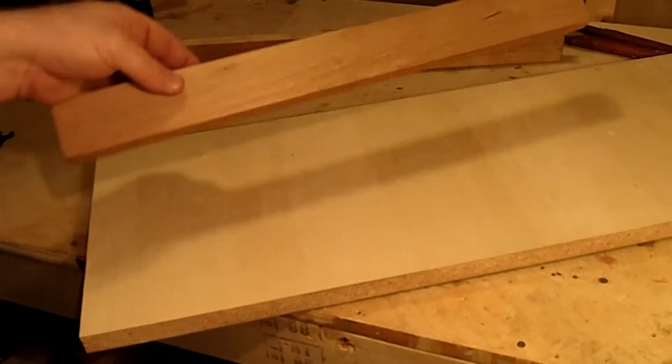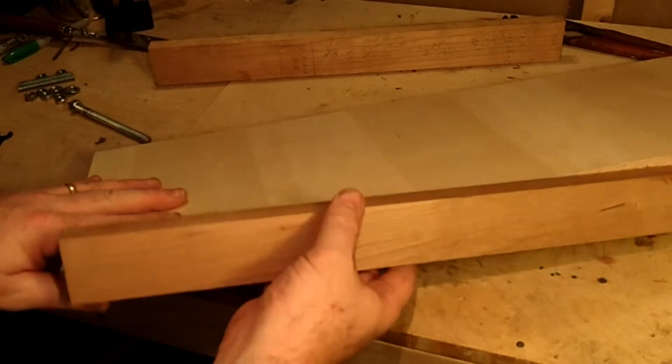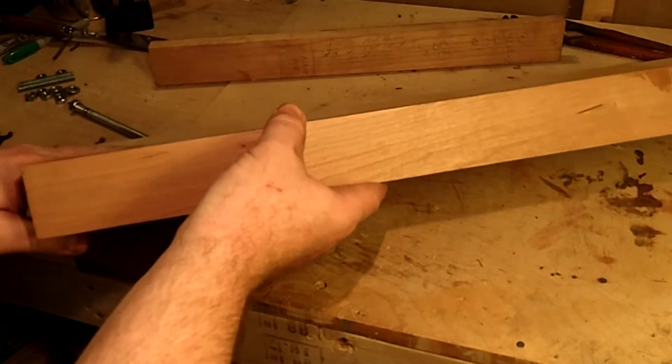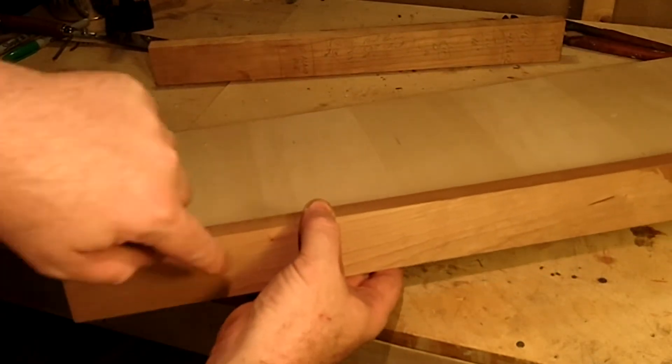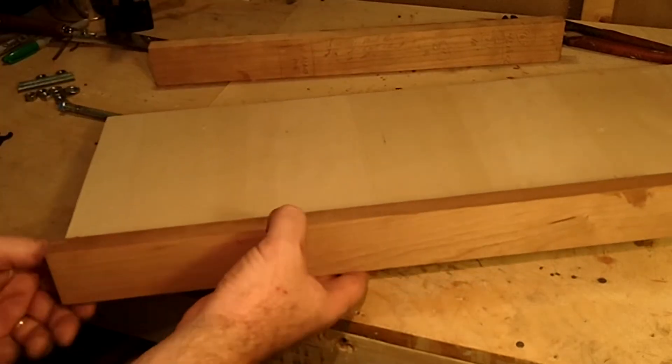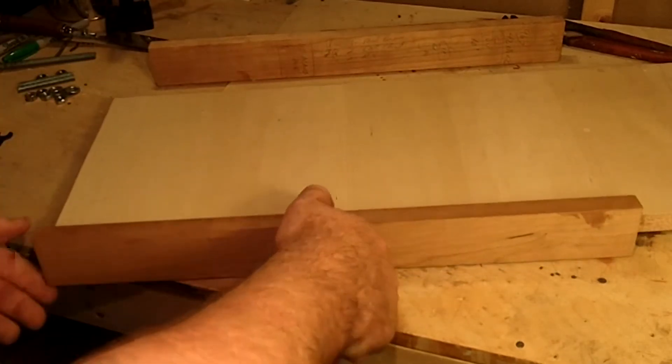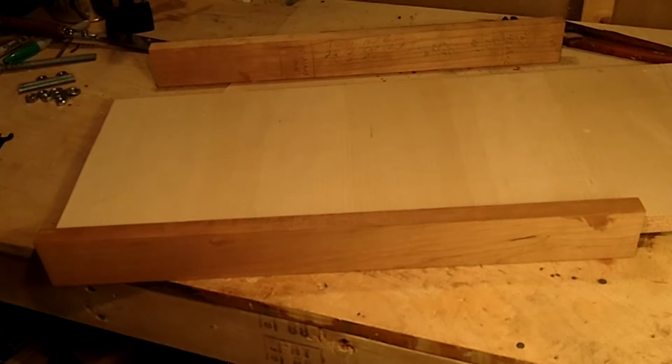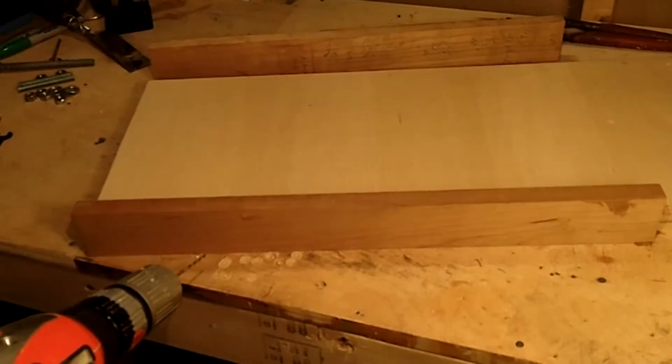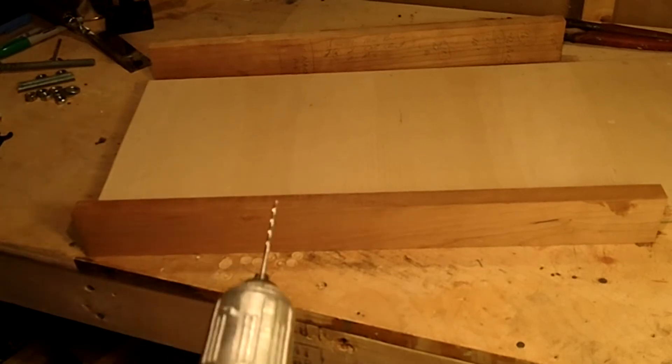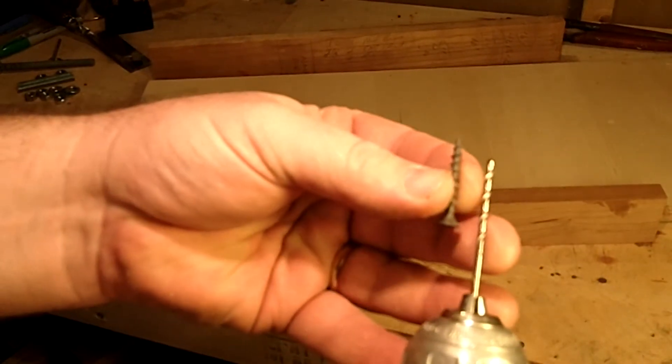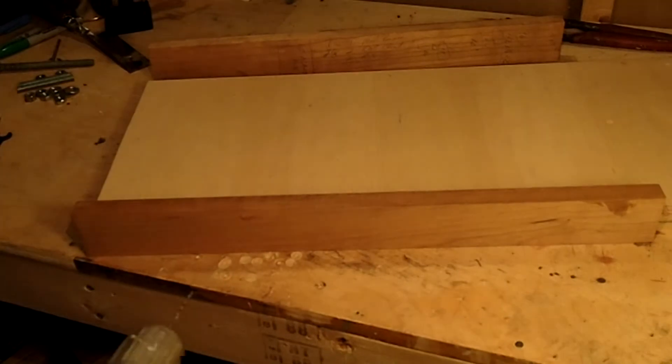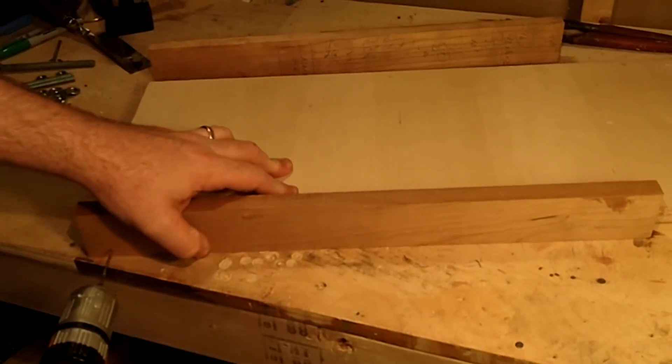And then we're going to go ahead and put the cradle together here. This is one of our bottom boards and I'm just going to put a few screws right here to mount these side pieces in place. And this is the longer of the two bottom pieces. And here I'm just going to drill some pilot holes that fit the screws I'm going to use.